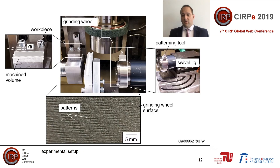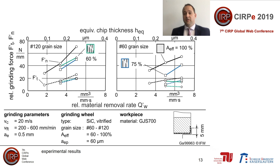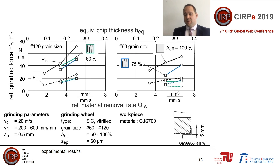In addition to the process design, I presented first experimental results of the grinding process with patterned grinding wheels. Here you can see the experimental setup. I would like to highlight the swivel jig that enables the implementation of the inclination angle. In this study, cast iron was ground using two silicon carbide grinding wheels. From the results, you can see that the process forces are reduced when applying patterns to the grinding wheel topography. When comparing both grinding wheels, it can be seen that the influence of the patterns increases with the increase in grain size. The reason for this is the interaction between the grains and the surface; however, this is part of the further work.